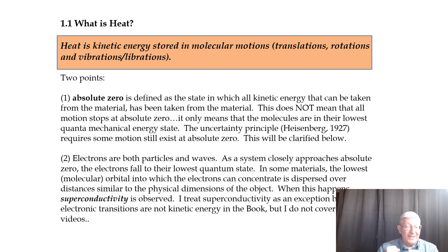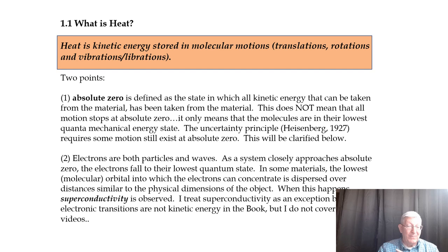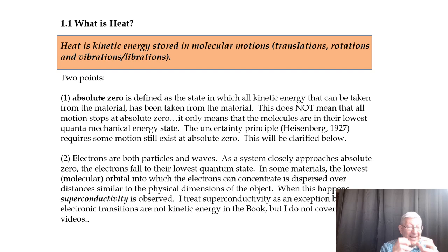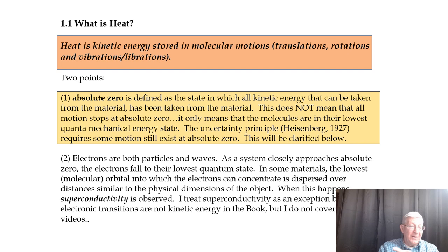Two points come up. One is: what is absolute zero? Can you take all that energy out? The answer is yes — there is an ability to take heat out of a material. But absolute zero does not mean that everything stops moving, as many high school teachers say. Quantum mechanically, you can't stop motion because of the uncertainty principle — you can't simultaneously know the position and momentum of a particle. Absolute zero is a state in which you've taken all the available energy out. All the degrees of freedom that a molecule might have have been reduced to their lowest state, but even at the lowest state, they still move.